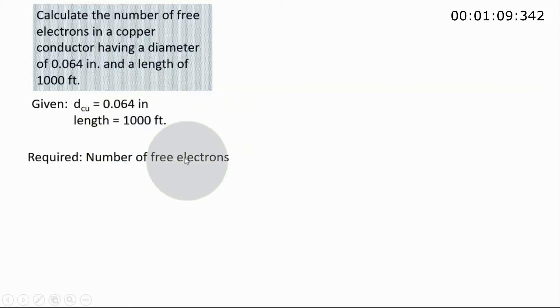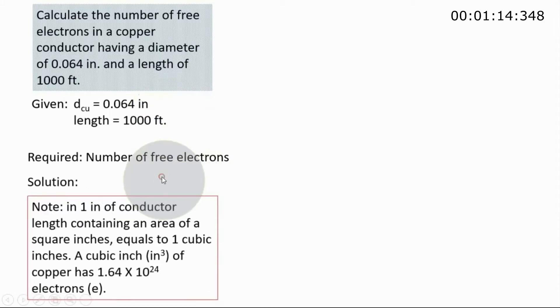Let us remember for our solution that in one inch of conductor length containing an area of one square inch, that will be equal to one cubic inch. The amount of electrons in one cubic inch is 1.64 times 10 raised to the 24 power. So this is the number of electrons in one cubic inch. We need this to solve for the required number of free electrons in this problem.